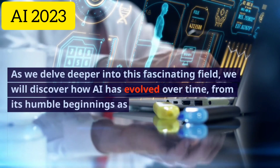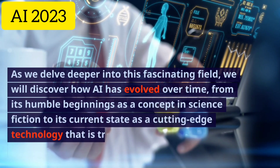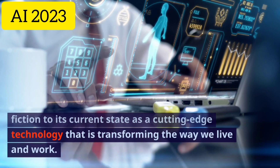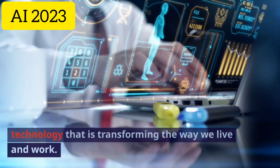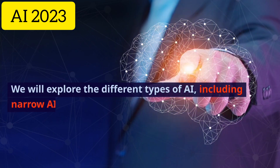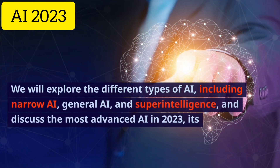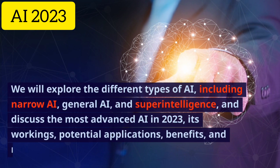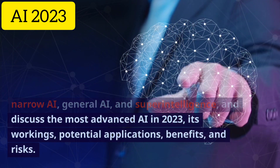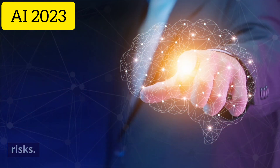As we delve deeper into this fascinating field, we will discover how AI has evolved over time, from its humble beginnings as a concept in science fiction to its current state as a cutting-edge technology transforming the way we live and work. We will explore the different types of AI, including narrow AI, general AI, and superintelligence, and discuss the most advanced AI in 2023, its workings, potential applications, benefits, and risks.